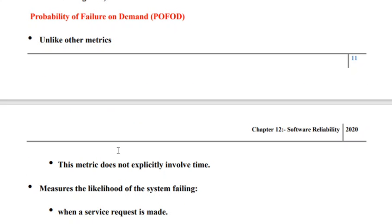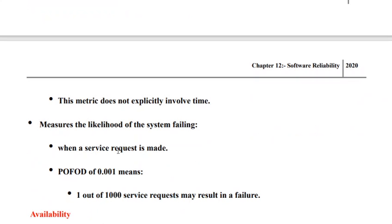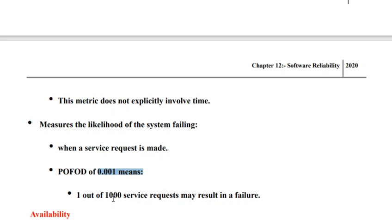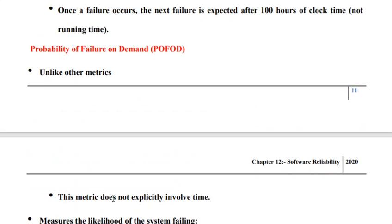Now, probability of failure on demand. Probability of failure on demand basically means the likelihood of the system failing to provide its services — that is, the measurement of the likelihood of the system failing to provide services when requested. So if the probability of failure on demand is 0.001, it means 1 out of 1000 service requests may result in failure. Whenever we are trying to demand the services of a particular function and the system fails to provide that function, that is called probability of failure on demand.